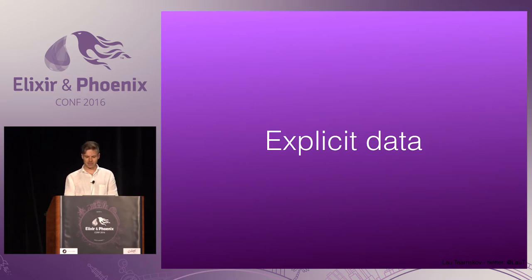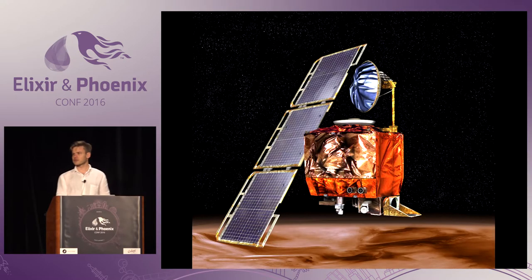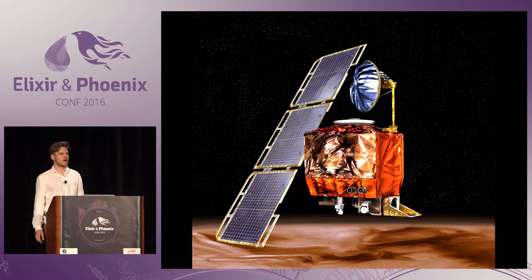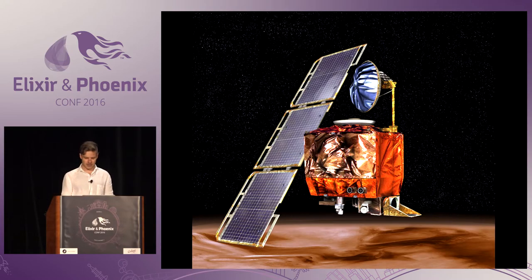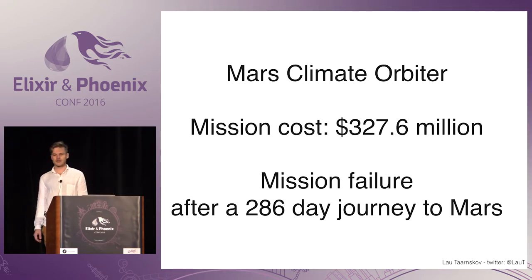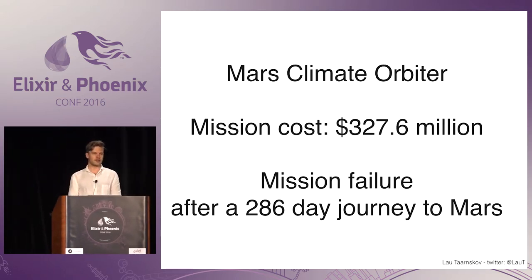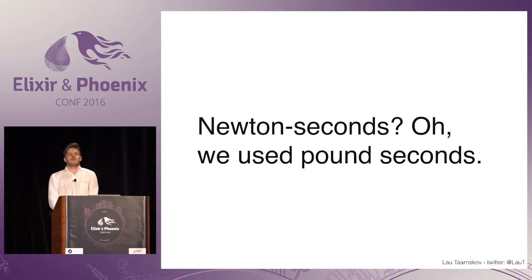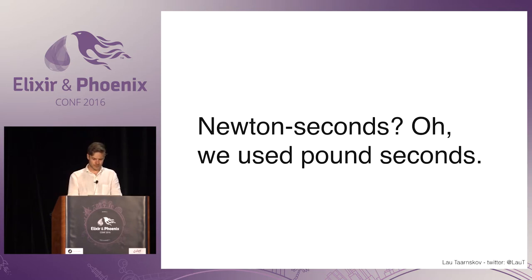I'm going to talk about explicit data. That was the Mars Climate Orbiter. It went along towards Mars on a 286-day journey, and then it failed. Why was that? Because there were some people that were supposed to send data about how it was going — some thruster data — and they used pound-seconds instead of newton-seconds.